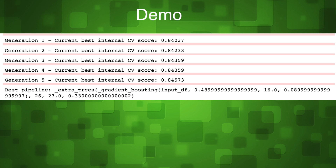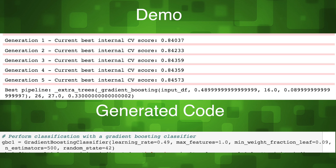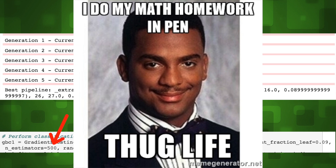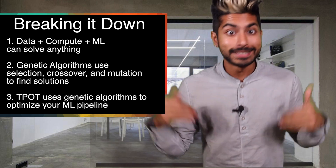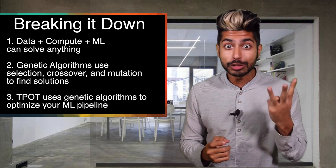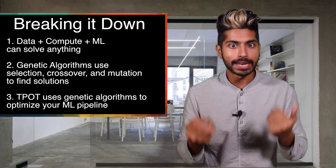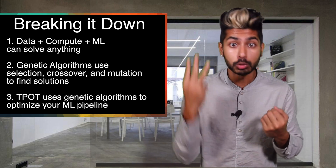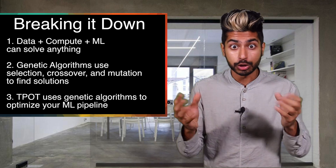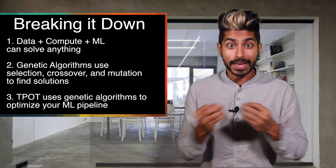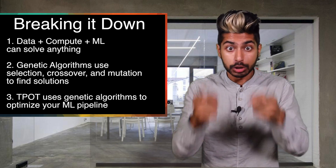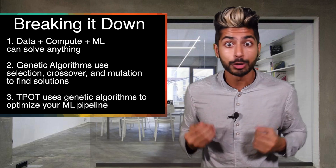Let's demo this. After training, we'll see that after five generations, TPOT chose the gradient boosting classifier as the most accurate machine learning model to use. It also chose the optimal hyperparameters like the learning rate and number of estimators for us. To break it down: with the right data, computing power, and machine learning model, you can discover a solution to any problem. Genetic algorithms replicate evolution via selection, crossover, and mutation to find an optimal solution, and TPOT is a Python library that uses genetic programming to help you find the best model and hyperparameters for your use case.